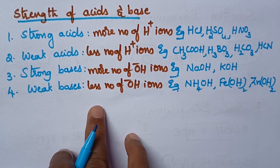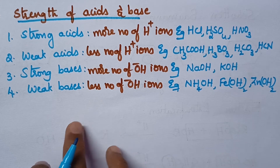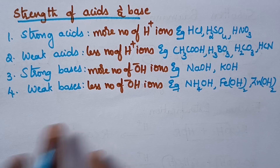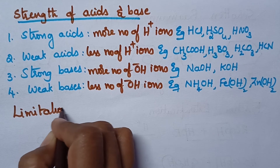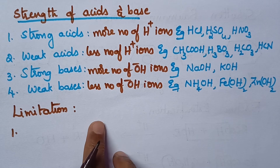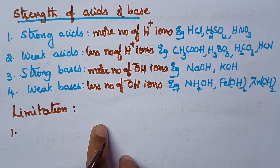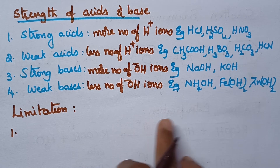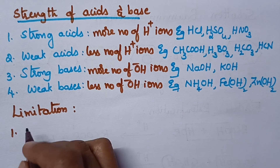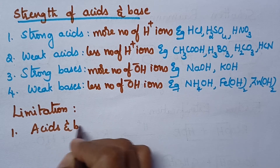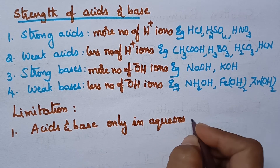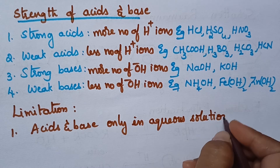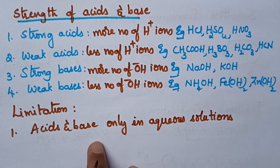This is about the Arrhenius theory of acids and bases. However, Arrhenius theory is associated with several limitations. According to Arrhenius, acids and bases will produce H+ and OH- ions only in water, so he explained the behavior of acids and bases only in aqueous solutions. Whenever we consider substances in non-aqueous solutions, he cannot explain the acidic and basic nature of those substances.